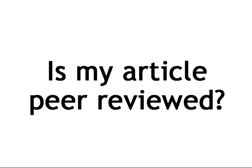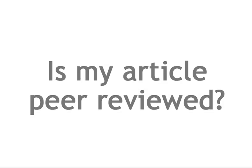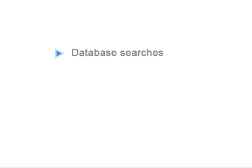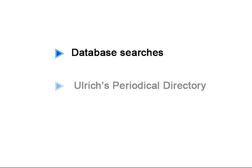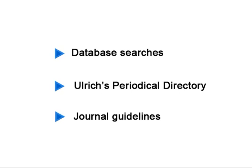To determine whether your article is peer-reviewed, you must find out if the journal that published the article is peer-reviewed. This can be done in three ways: first, through your database searches; second, by consulting Ulrich's Periodical Directory; or third, by consulting the publishing and submission guidelines for that specific journal.